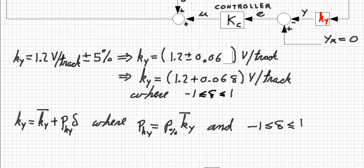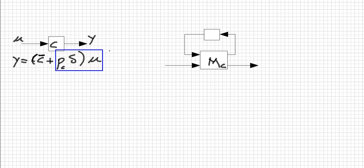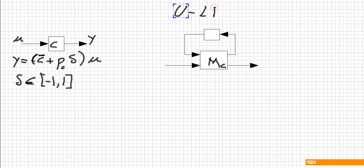Now, let's assume we have an uncertain gain C in a block diagram. The input is U and the output is Y. Then Y is given by the gain times the input, and the uncertain gain is expressed as before. We know that delta can be any value between minus 1 and 1. The idea now is to express this uncertainty as a structured uncertainty using an upper-linear fractional transformation.